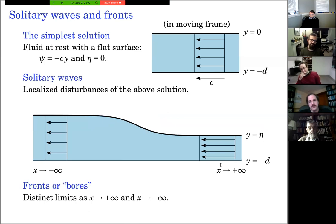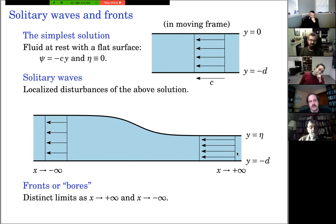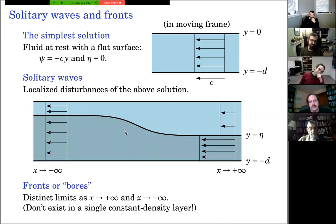A front, or bore, is the same idea except the limits as x goes to plus infinity and minus infinity are different — they can't be the same, otherwise it would be a solitary wave. In the moving frame, you see one uniform flow at one end and a different uniform flow at the other end, with the areas of the two cross-sections agreeing by mass conservation. In the simplest single-layer case there are no fronts, only solitary waves, but fronts can appear in two superposed layers with a rigid lid.